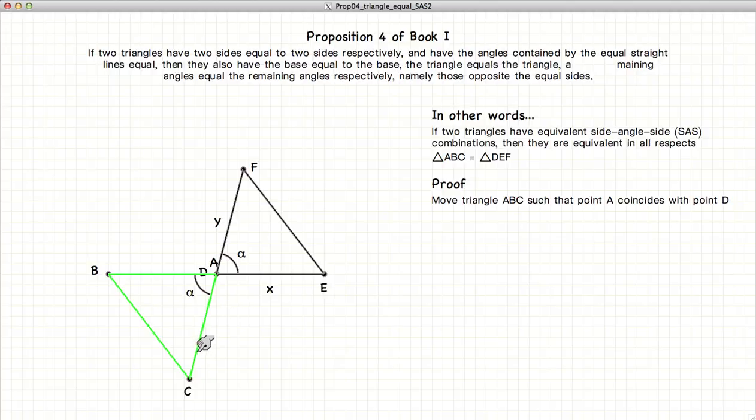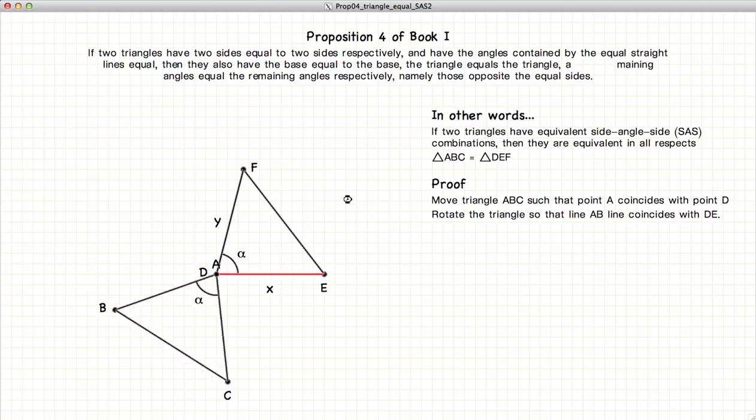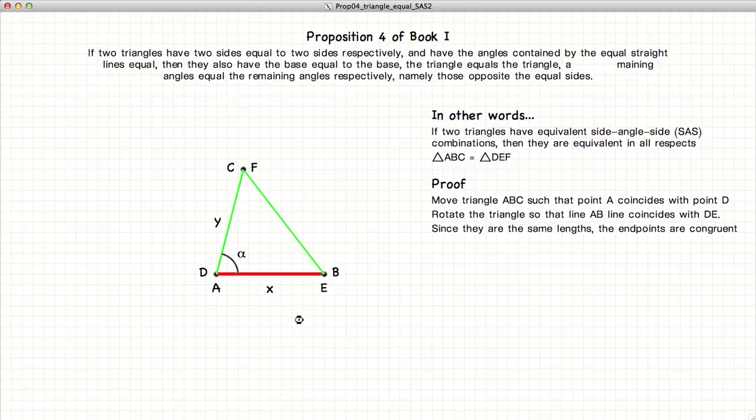Now we rotate our triangle ABC so that AB lies on top of DE. Now if we look at our lines AB and DE, they are equal in length, and because they are equal in length, that means that their end points must also coincide with one another. So these two points D and A coincide with one another, as do the two points E and B.